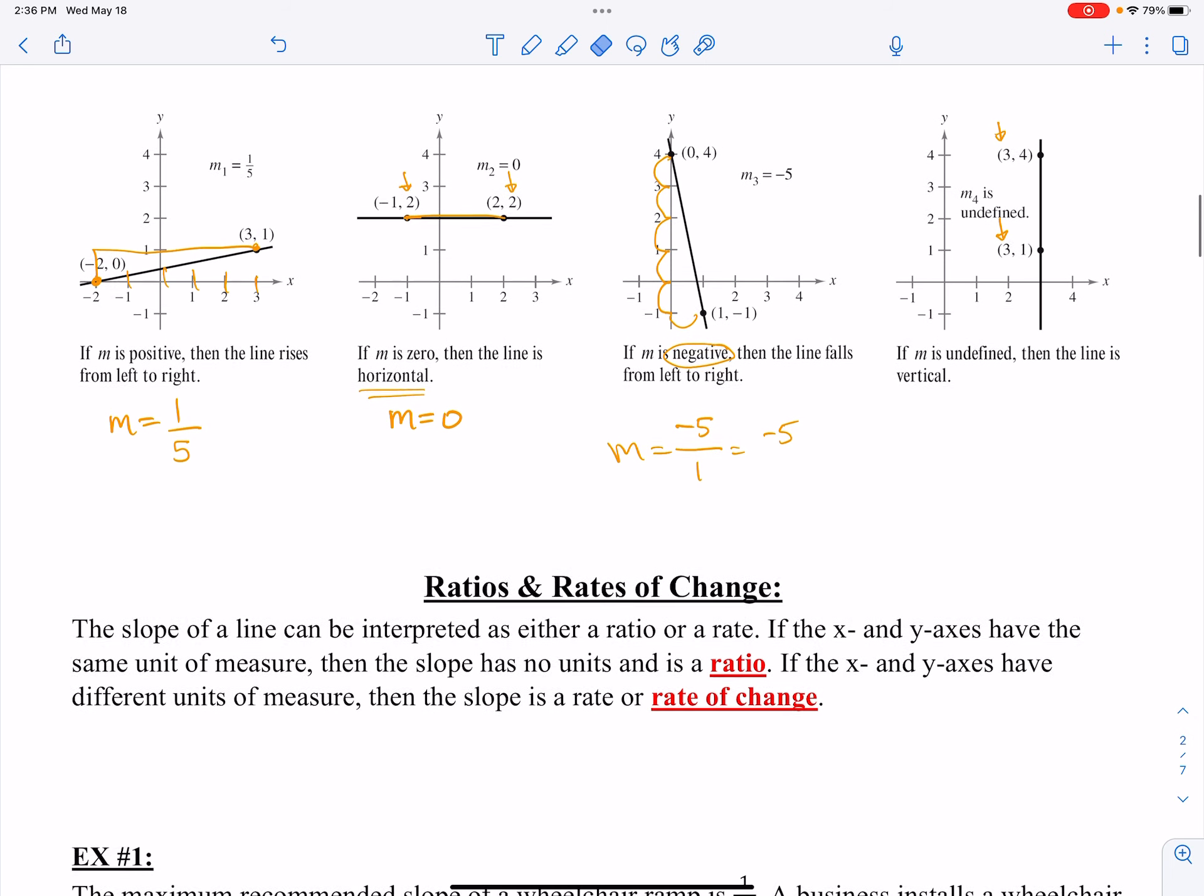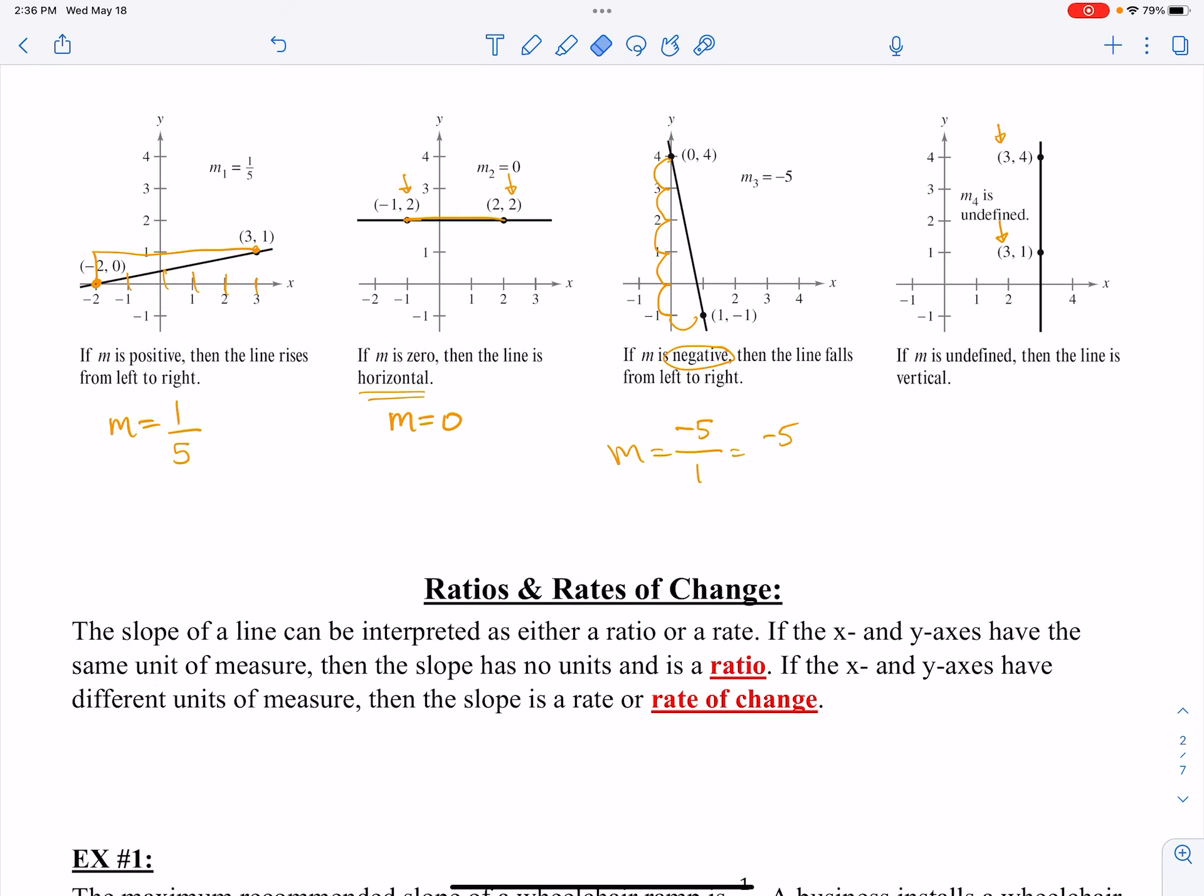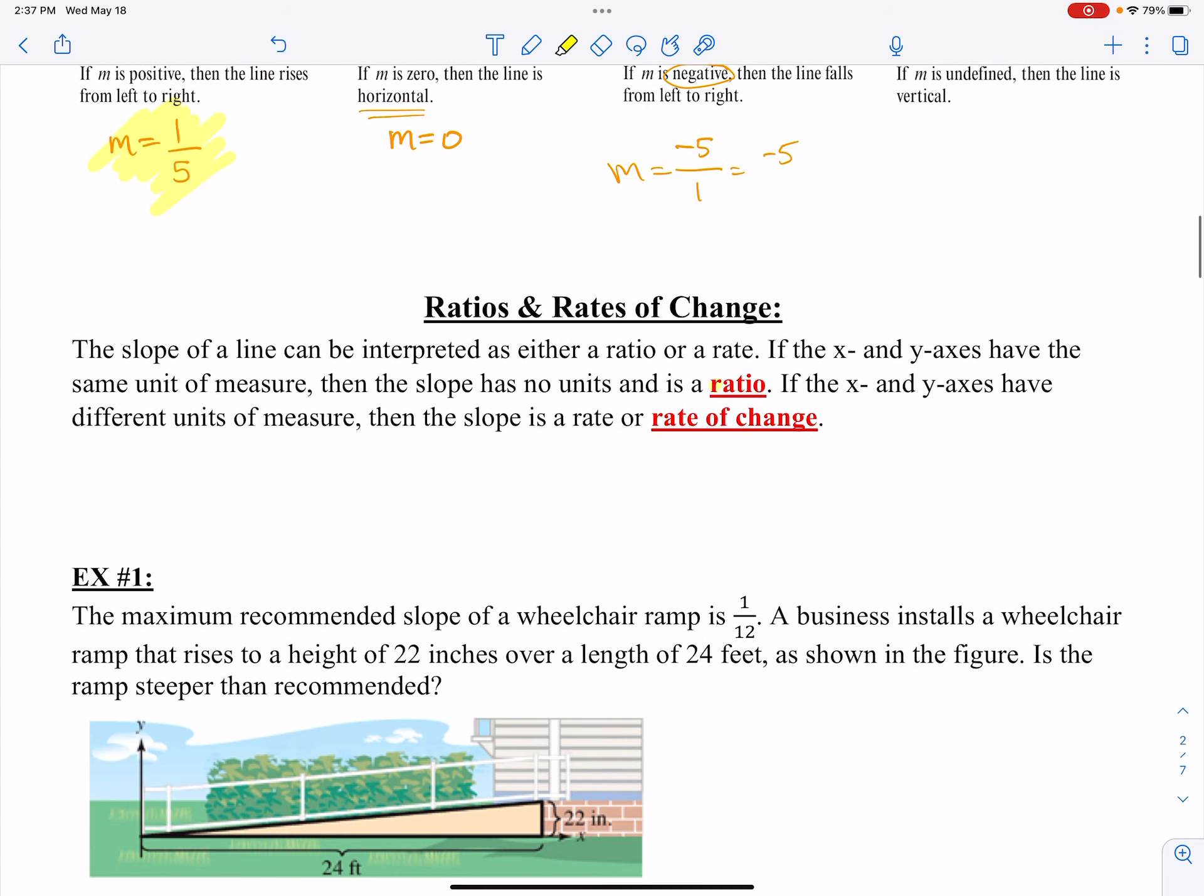For example, these problems that we did up here, these examples where we looked at the change in y over the change in x, like this first one here, notice it was 1 over 5. That is a ratio, 1 unit up over 5 units over. They're both just units on that graph, so it is just a ratio.